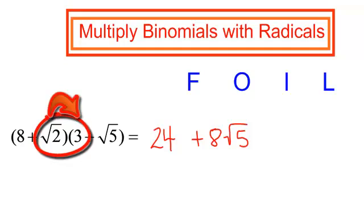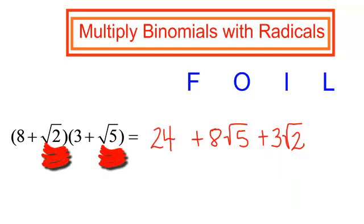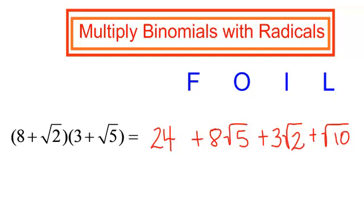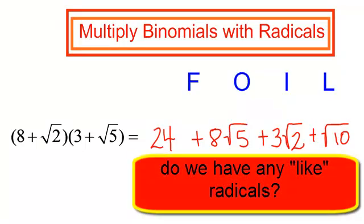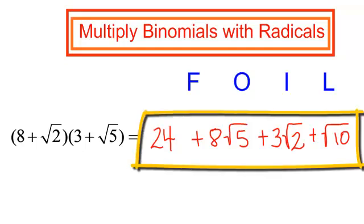The inner term: radical 2 times 3 would be a positive 3 radical 2. I do like to put the coefficient in front of the radical. And the last term: positive radical 2 times positive radical 5 is positive radical 10, since 2 times 5 is 10. I can't break down any of these radicals — breaking 10 into 5 times 2 would give radical 5 times radical 2, which is different, so I still would not have any like terms.